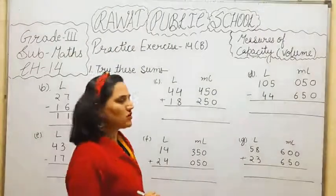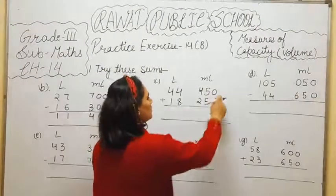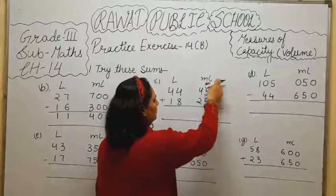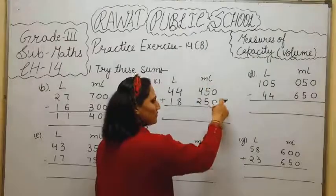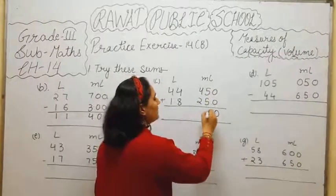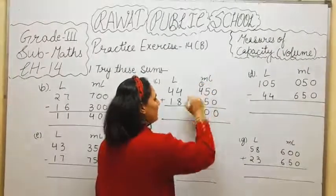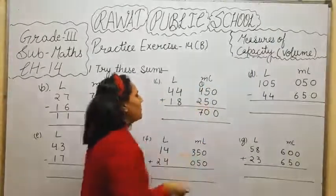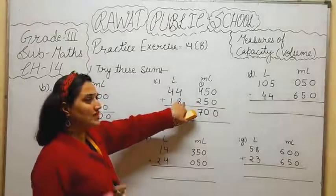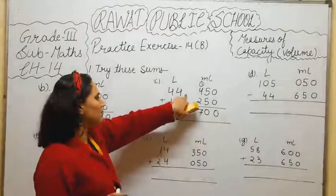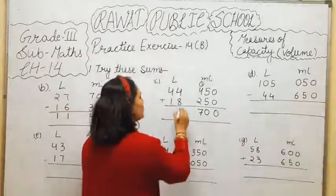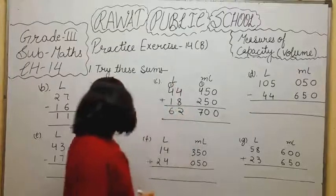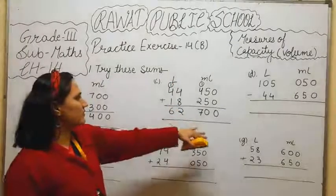Question number C is a question of addition. 0 plus 0 is 0. 5, 5, 10. 0 carry 1 here. 4 plus 2, 6. Plus 1, 7. Now, 8 plus 4. I already tell you how to add it. 8 plus 2, 10 plus 2, 12. 2 is here, 1 is carry. 4, 5 and 6. So, 62 liter and 700 ml.